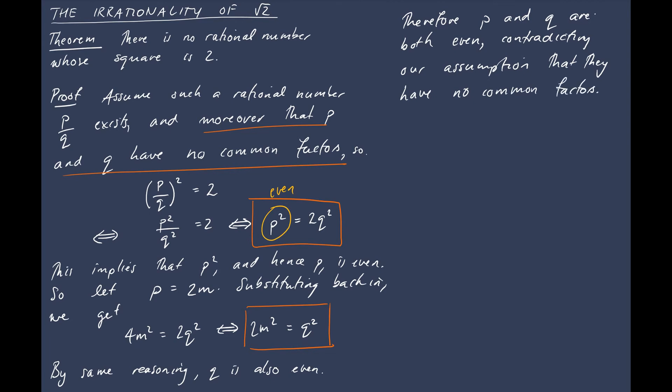So we've assumed the negation of our theorem. We have derived an absurdity, or a contradiction, if you like. And therefore, our theorem is true. It is proven. And we can finish it off with a nice little colored in white.